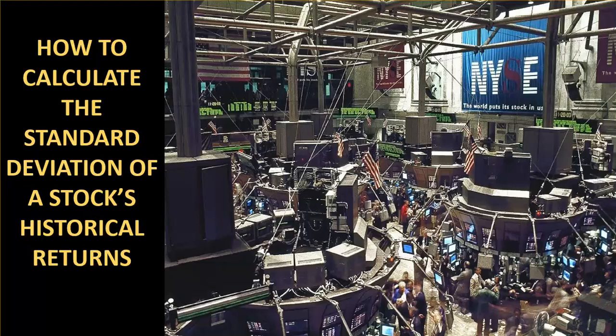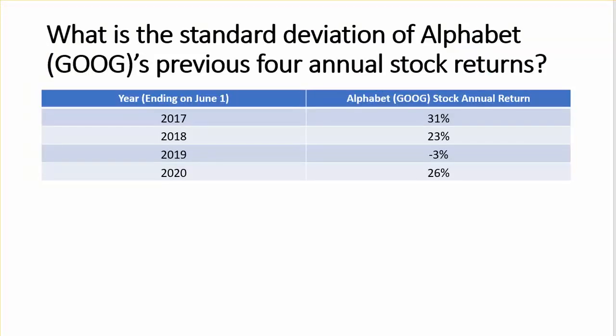How to calculate the standard deviation of a stock's historical returns. These four years' returns of Alphabet, which is the holding company of Google, are given from 2017 to 2020. We will calculate the standard deviation from this sample of data.